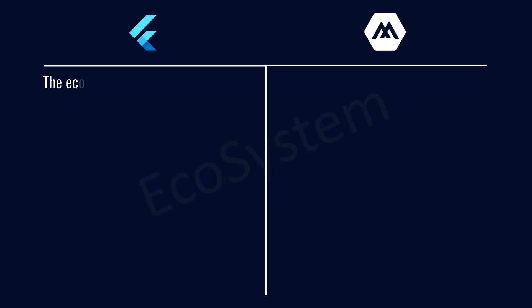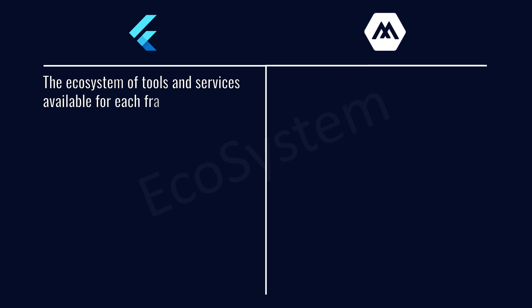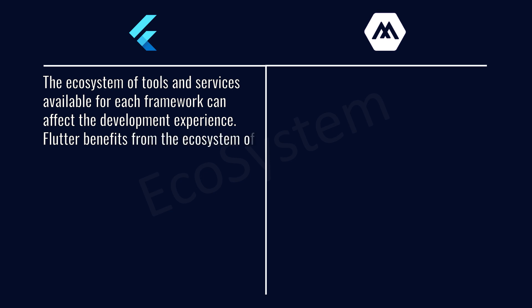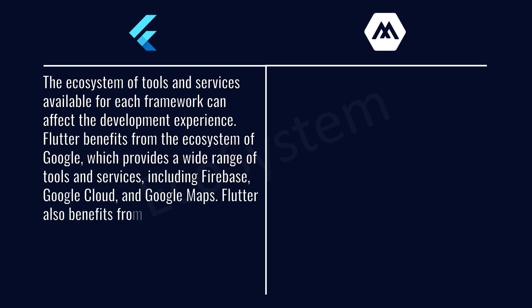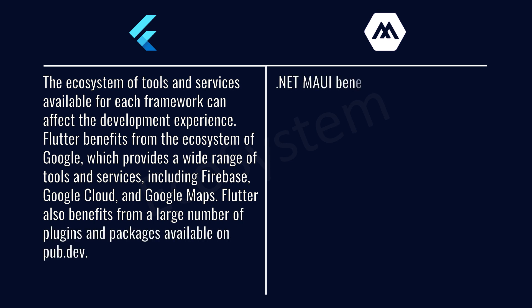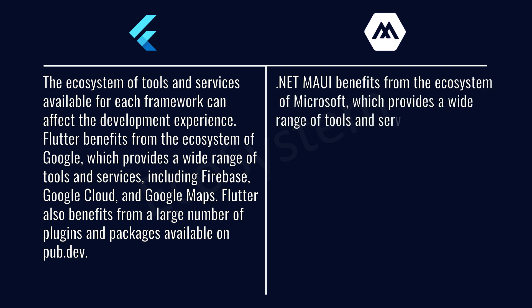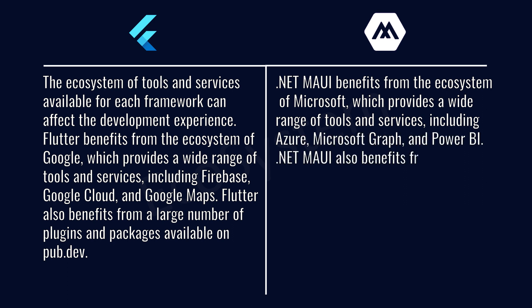The ecosystem of tools and services available for each framework can affect the development experience. Flutter benefits from the ecosystem of Google, which provides a wide range of tools and services, including Firebase, Google Cloud, and Google Maps. Flutter also benefits from a large number of plugins and packages available on pub.dev. .NET MAUI benefits from the ecosystem of Microsoft, which provides a wide range of tools and services, including Azure, Microsoft Graph, and Power BI. .NET MAUI also benefits from a large number of NuGet packages and libraries available online.